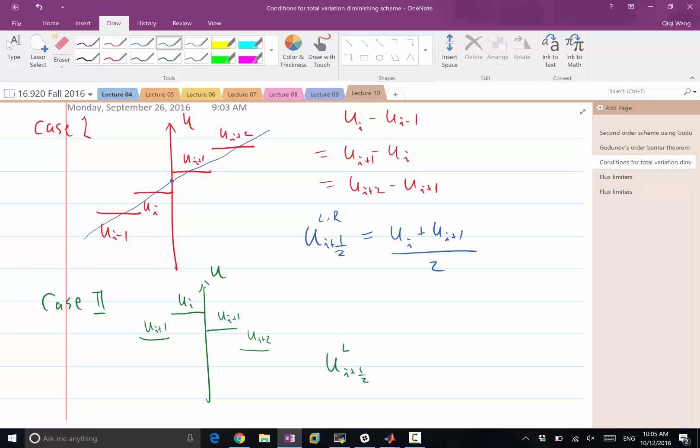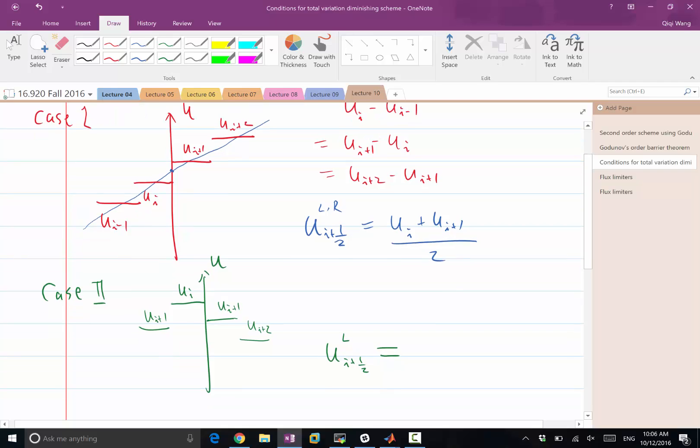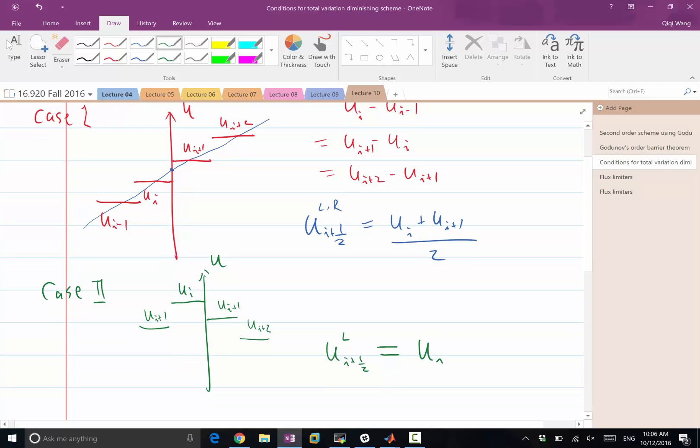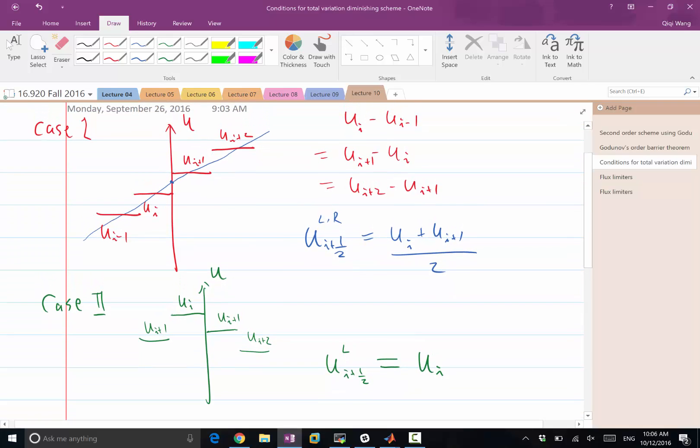Yes? It should be the value of ui? Yes. So in this case, the reconstructed value should actually be the value of ui.